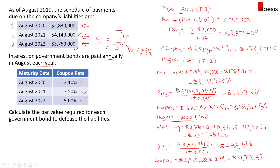Now let's do a quick check to confirm we have enough to cover the outflows. The total cash flow in year one is: the par value of $2,465,688, plus the year-one coupon of $51,779.45, plus the two-year bond coupon of $133,961.35, plus the three-year bond coupon of $178,571.45. Adding all this up gives us $2,830,000.25 — covering the $2.83 million liability with just 25 cents excess.